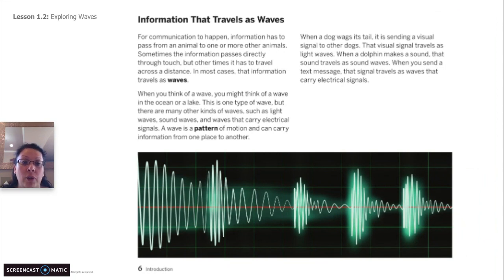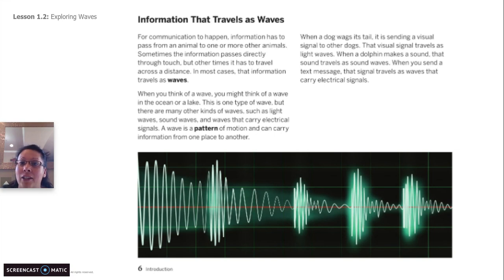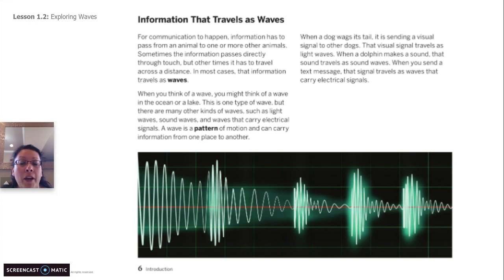Information that travels as waves. For communication to happen, information has to pass from an animal to one or more other animals. Sometimes the information passes directly through touch, but other times it has to travel across a distance. In most cases, that information travels as waves. When you think of a wave, you might think of a wave in the ocean or a lake — that's just one type of wave. There are many other kinds of waves, such as light waves, sound waves, and waves that carry electrical signals. A wave is a pattern of motion and can carry information from one place to another.